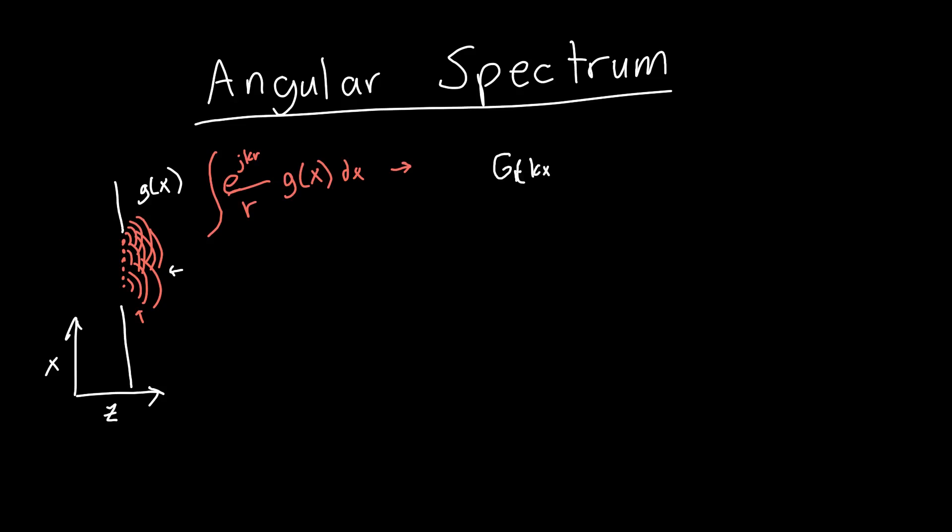So g of kx, or its spatial spectrum. And we figured out a transfer function for if we're interested in what the pattern, what the electromagnetic field pattern looks like here. Let's call that g out of x.